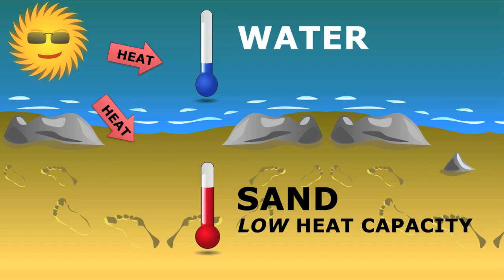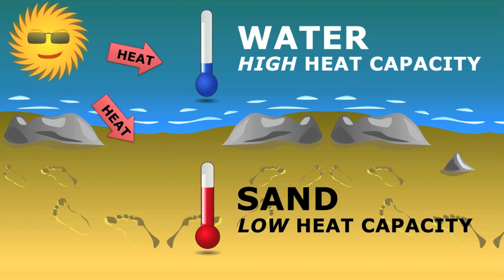Sand has a very low heat capacity. Water has a very high heat capacity. That means you have to heat up water an awful lot before the temperature goes up. Sand only has to be heated a small amount before the temperature goes up. So a small amount of heat from the sun can make the sand very hot. The difference between these two substances is huge.